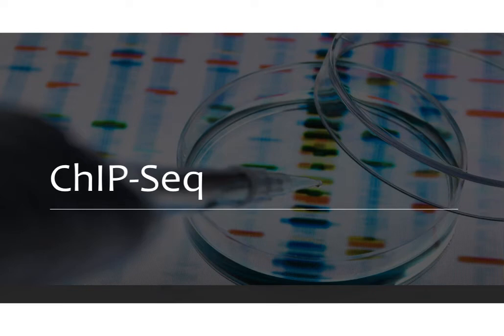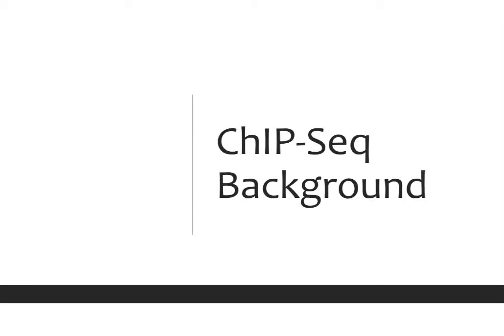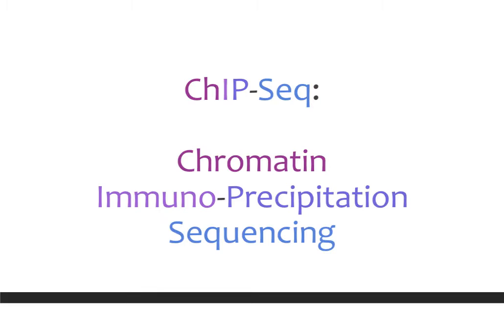Today we'll be talking about CHIP-seq, otherwise known as chromatin immunoprecipitation sequencing. Let's start with some basic background concepts that you need to understand in order to really understand CHIP-seq. CHIP-seq stands for chromatin immunoprecipitation sequencing: the CH is for chromatin, the IP is immunoprecipitation, and seq is sequencing. We need to make sure that we understand each of these components individually.